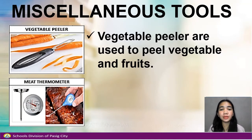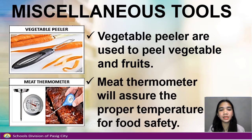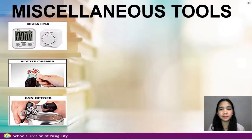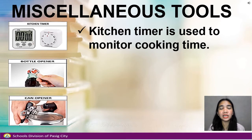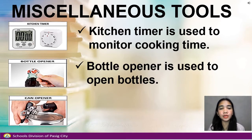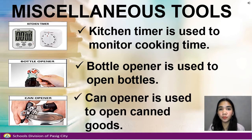Vegetable peeler is used to peel vegetables and fruits. Meat thermometer will assure the proper temperature for food safety. Kitchen timer is used to monitor cooking time. Bottle opener is used to open bottles, and can opener is used to open canned foods.